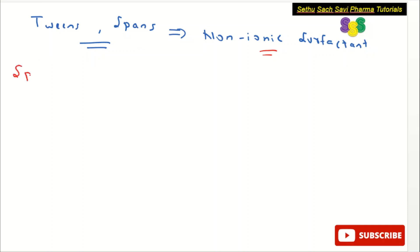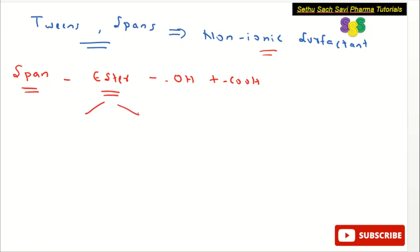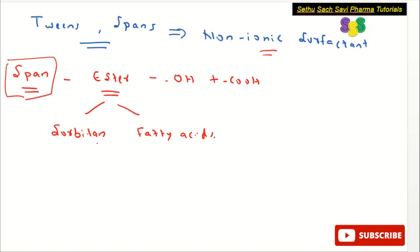Let us take span as the first example. Span is a non-ionic surfactant and it is an ester compound. An ester is formed by the combination of the hydroxyl group and the carboxyl group condensing together. For span, the alcoholic group comes from a compound called sorbitan, and the carboxyl group comes from the COOH of fatty acids. So span is the ester of the alcoholic group of sorbitan and the acid group of fatty acids.